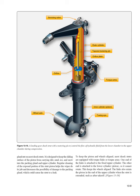Regular cleaning of the exposed portion of the strut piston helps the wiper do its job and decreases the possibility of damage to the packing gland, which could cause the strut to leak. To keep the piston and wheels aligned, most shock struts are equipped with torque links or torque arms. One end of the links is attached to the fixed upper cylinder; the other end is attached to the lower cylinder piston so it cannot rotate, keeping the wheels aligned. The links also retain the piston in the end of the upper cylinder when the strut is extended, such as after takeoff.